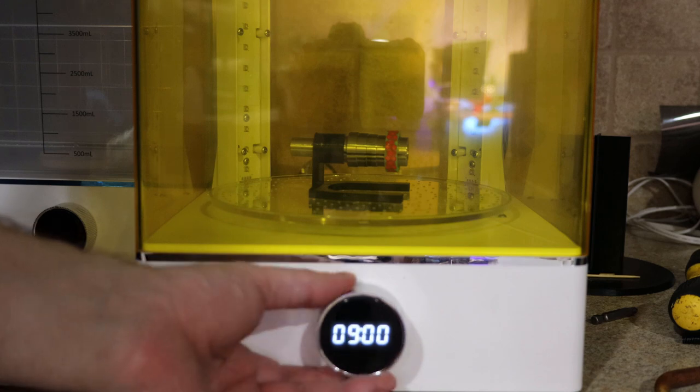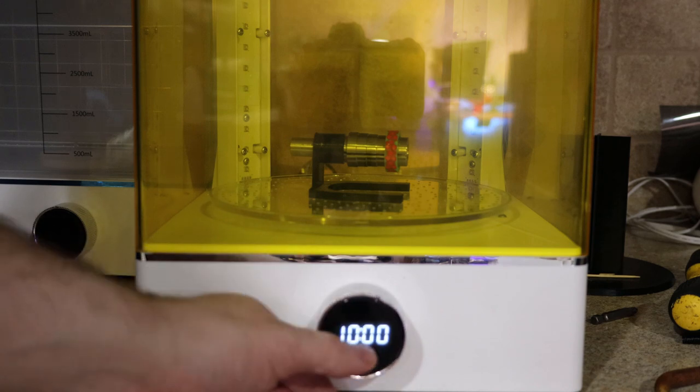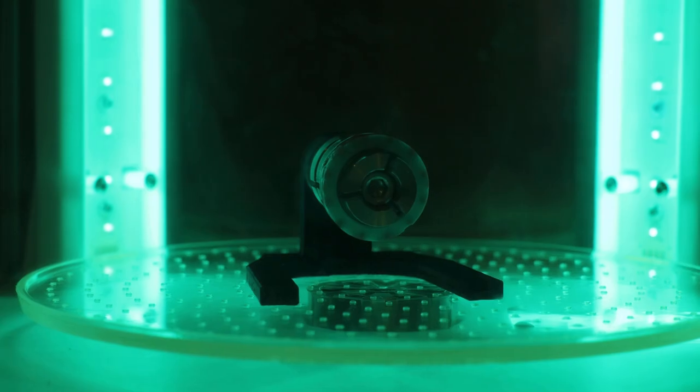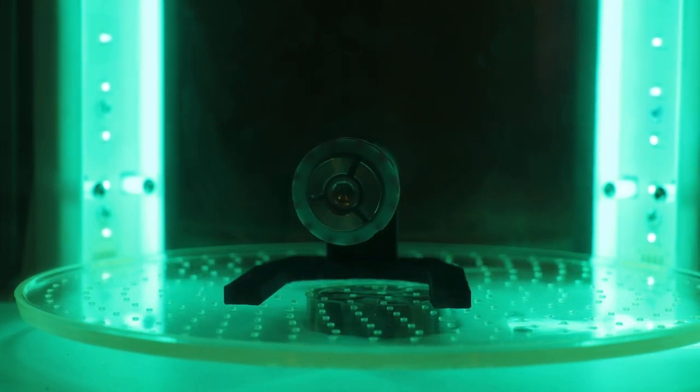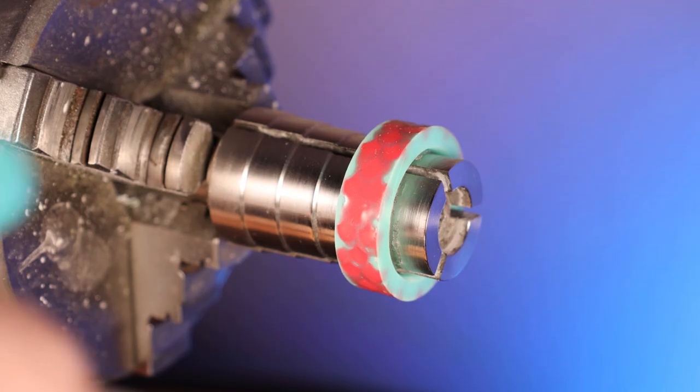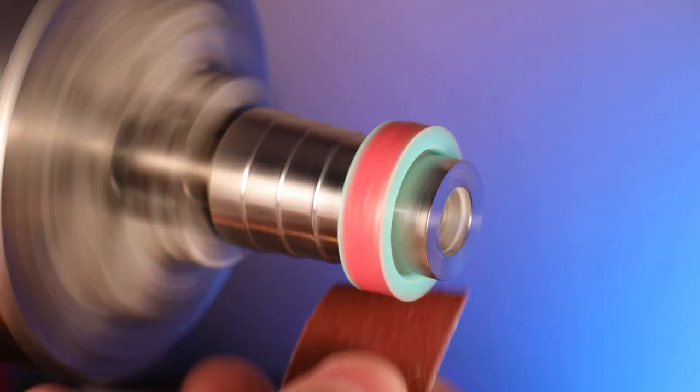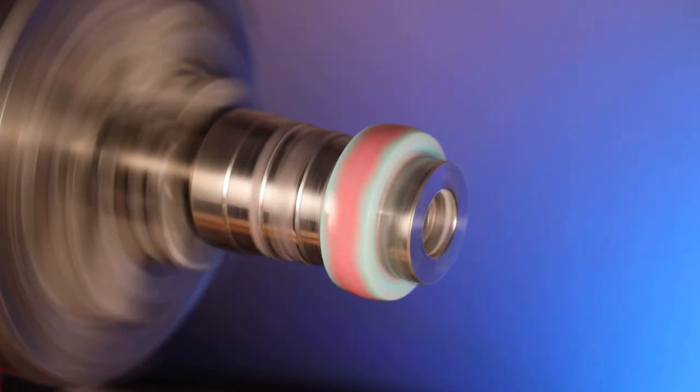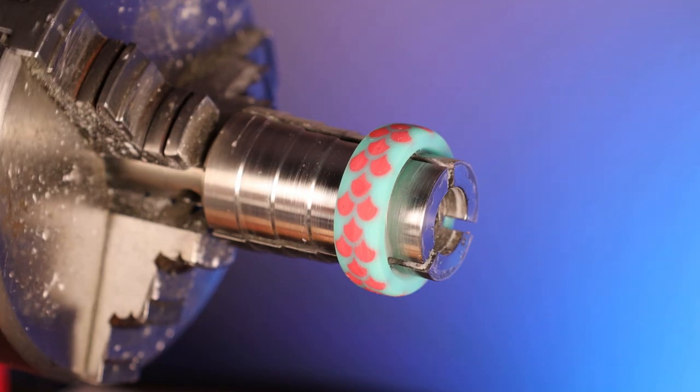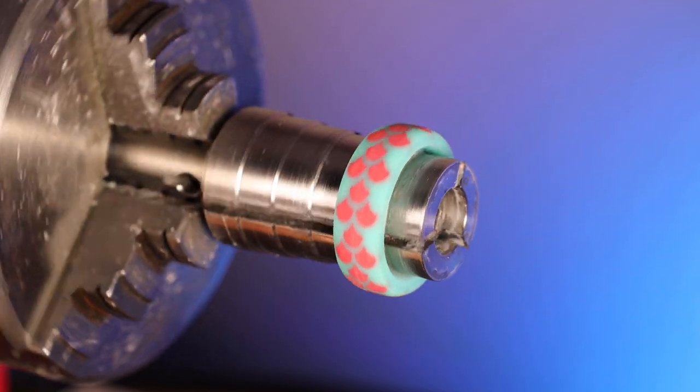And if you don't have one of these, you can just leave it in direct sunlight for a while. And with it all cured, it's going back on the lathe and it will go through the same process as the other ring, which is just sanding it down and shaping it and then polishing it up using some of the plastic polish.